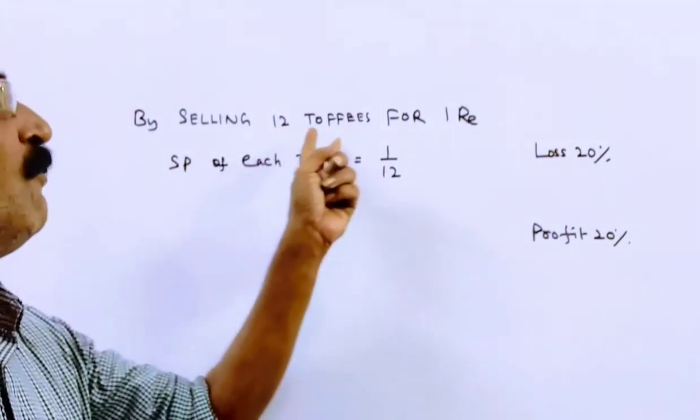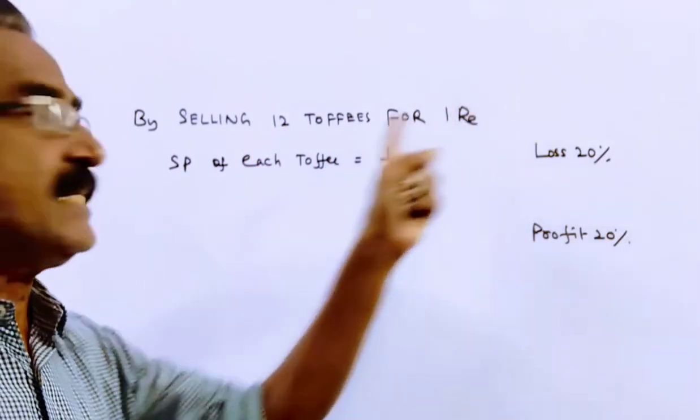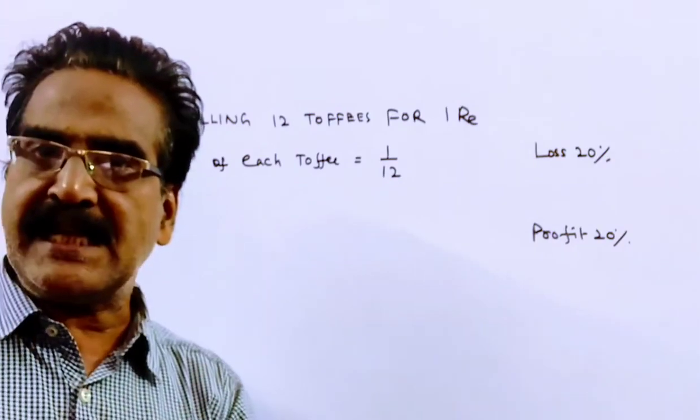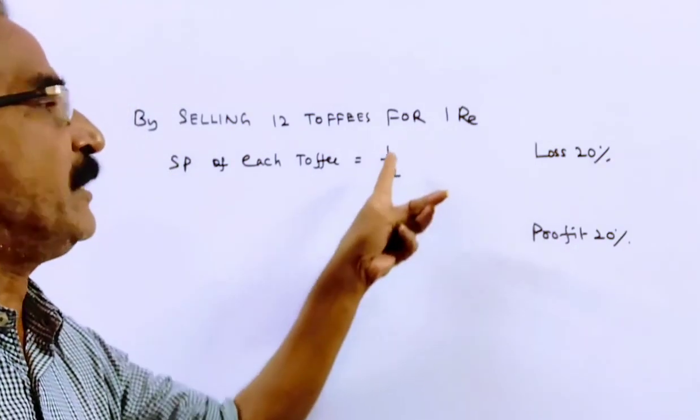Friends, selling 12 toffees for 1 rupee means selling price of each toffee is 1 by 12.